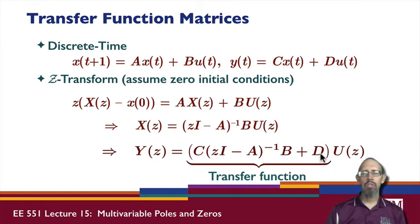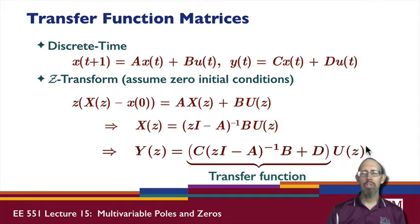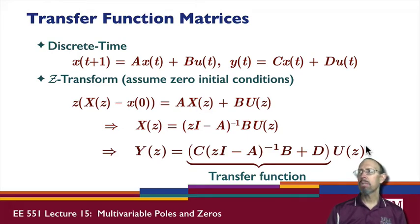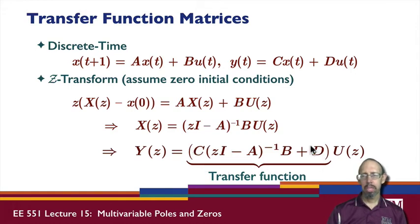In this case, it's a transfer function matrix. For a single input single output system, we often see the transfer function as Y of Z over U of Z. But when you have a multi-input multi-output system, you get a transfer function matrix. This is what we have in discrete time.